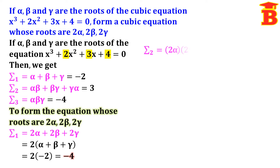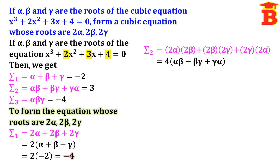Next, let us find new sigma 2 — the sum of two-two terms: 2 alpha times 2 beta, plus 2 beta times 2 gamma, plus 2 gamma times 2 alpha. Each pair gives a factor of 2 times 2 equals 4, so we take 4 as a common factor outside, giving 4 times (alpha beta plus beta gamma plus gamma alpha). Substituting the value 3 for alpha beta plus beta gamma plus gamma alpha, we get 4 times 3, which equals 12.